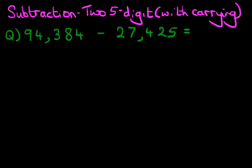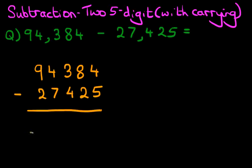The first stage is to rewrite this question into the vertical format. So let's do that over here: 94,384 minus 27,425. And let's label these columns as well. We've got units, tens, hundreds, thousands, and ten thousands.